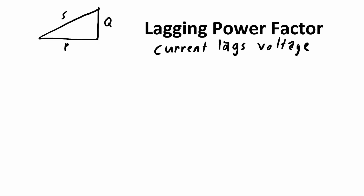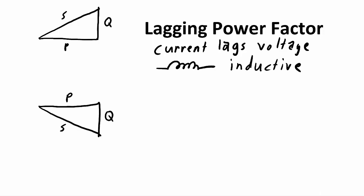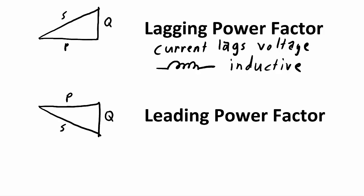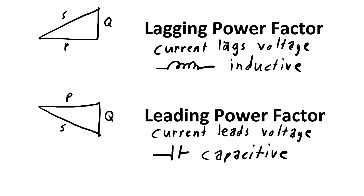Power factor can be lagging, which means current is lagging the voltage — this occurs when the reactive part of the circuit is more inductive. Power factor can also be leading, meaning current leads the voltage, which occurs when the reactive components are capacitive.